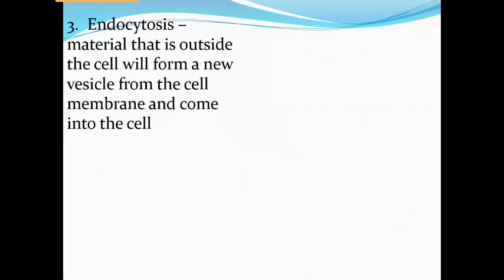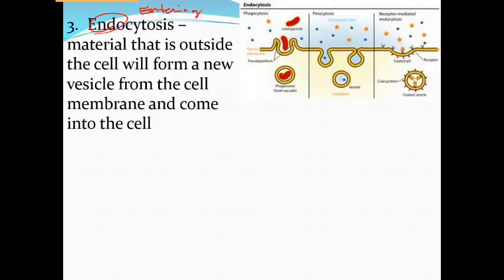The opposite would be endocytosis. So endo, you are entering or coming into something. Maybe you're entering the building, coming into the cell. So the material is on the outside of the cell. And it is going to form a vesicle. It's going to mesh with the cell membrane. It's going to come into the cell. So it's exactly the opposite as exocytosis.